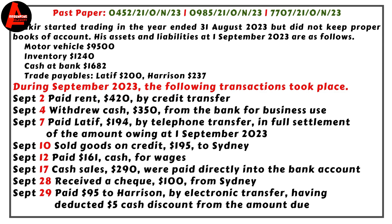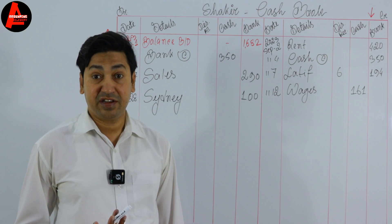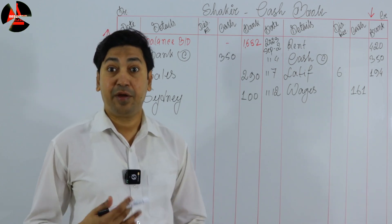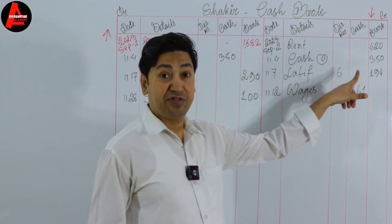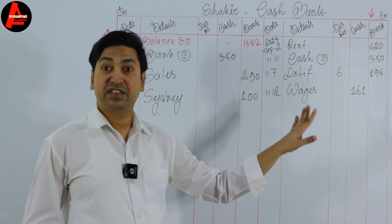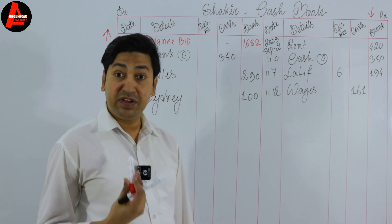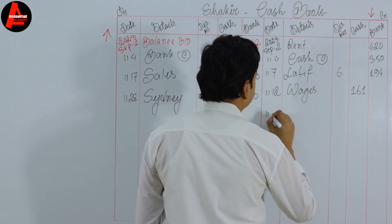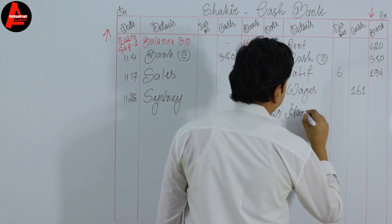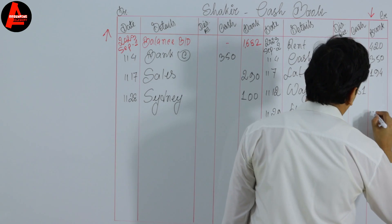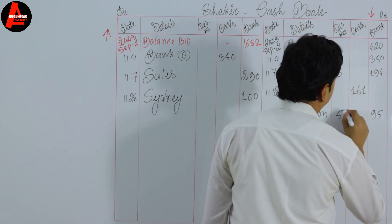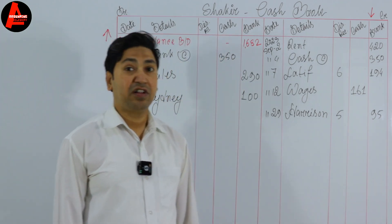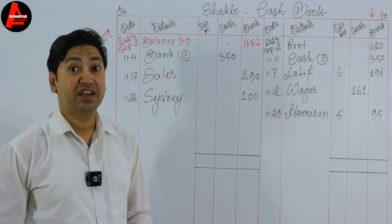September 29: paid 95 dollars to Harrison by electronic transfer, having deducted 5 dollars discount. Electronic transfer happens through the bank, so bank balance decreases — we record on the credit side. We write date September 29, Harrison in the detail column, 95 dollars on the bank column, and 5 dollars in the discount received column.